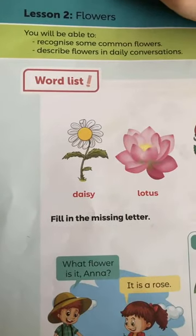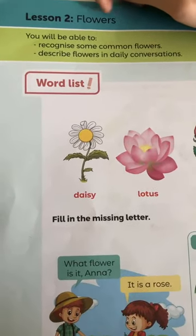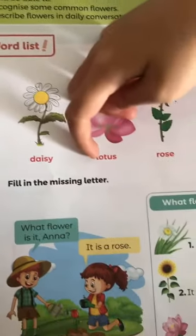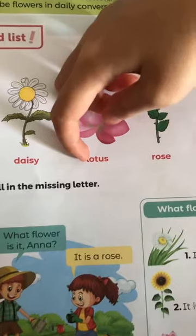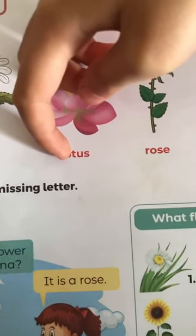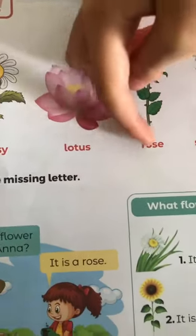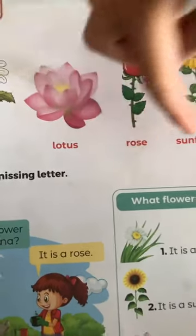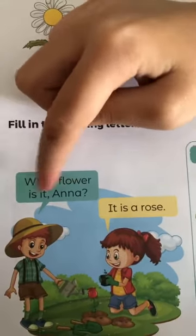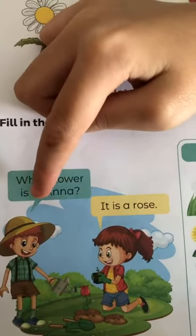Let's turn to flower: daisy, lotus, rose, sunflower. What flower is there?